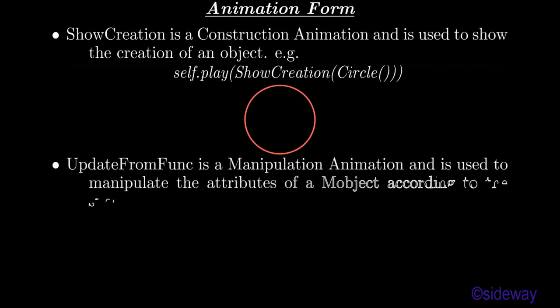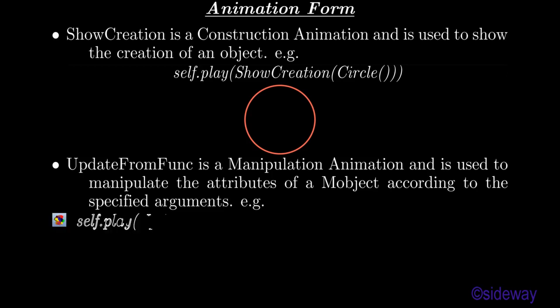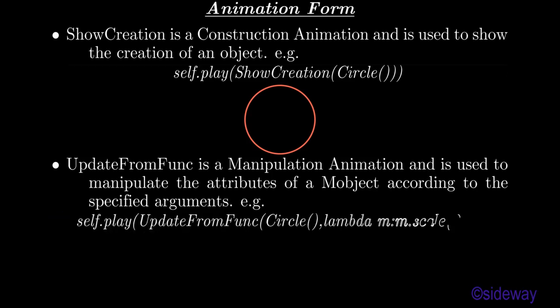UpdateFromFunc is a manipulation animation used to manipulate the attributes of an object according to the specified arguments. For example: self.play(UpdateFromFunc(circle, lambda mm: mm.scale(0.98))).